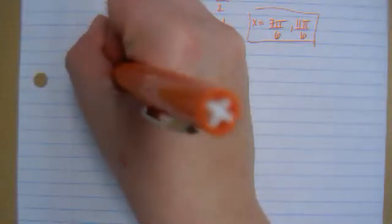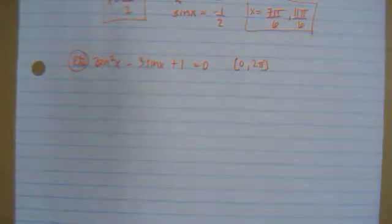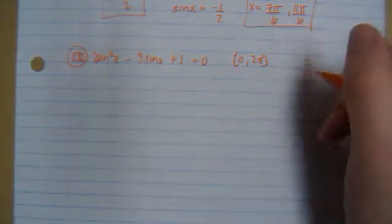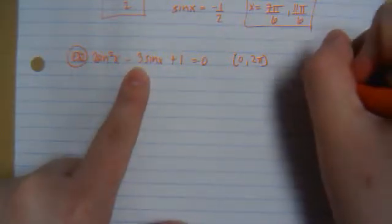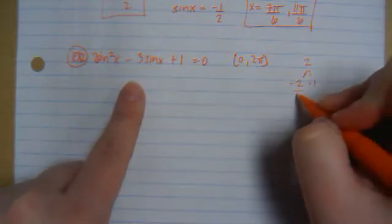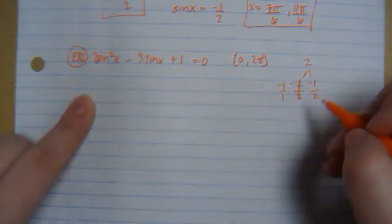So I have 2 sine squared x minus 3 sine x plus 1 equals 0. Again, both sine. So I'm going to be looking at the whole circle. I need to multiply. So 2 times 1 is 2. What multiplies to be 2, but adds to be negative 3, negative 2, and negative 1. Divide by your A. So this reduces. Put your sines back on.